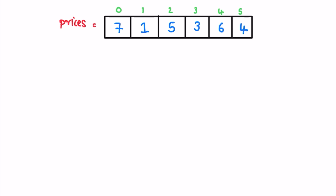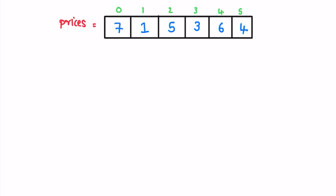Anyway, coming back to our question — here we have to buy the stock at a lower price and sell it on a future day to earn a profit. You can see that if you buy the stock on the day it's worth one dollar and sell it on the day it's worth six dollars, you make a profit of five dollars. To solve this question we are going to iterate through the array from left to right.